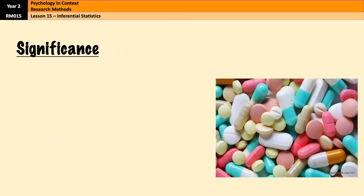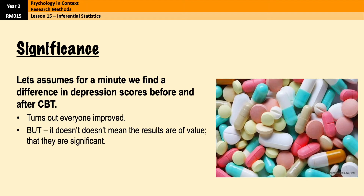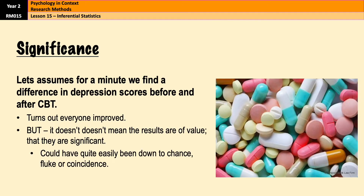Moving on — to say which of the hypotheses is true is strictly speaking not right. We're actually looking for significance rather than truth. Let's assume we find a difference in depression scores before and after CBT and it turns out everybody improved. Just because I found an improvement in depression scores after a six-week course of CBT doesn't mean that my results are valuable or significant — those results could quite easily have been down to chance, fluke, or coincidence.